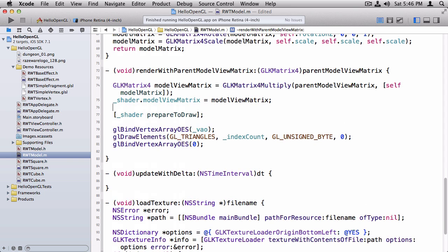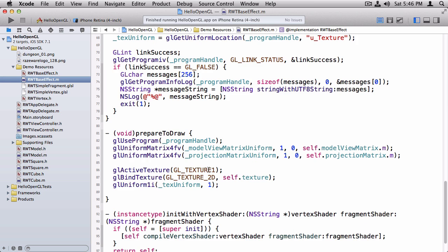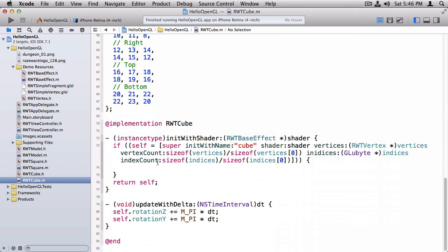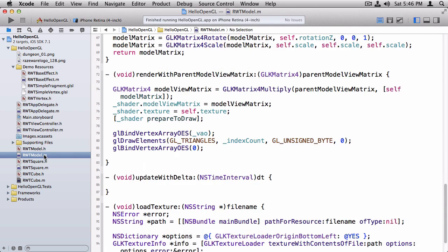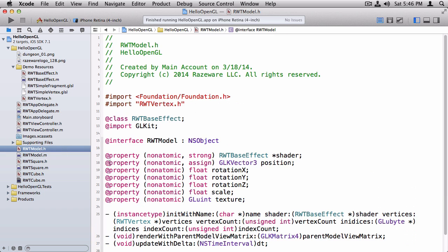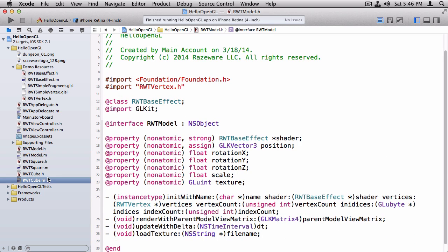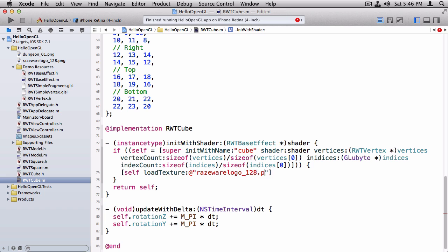Now, all we have to do is we need to, before we call prepareToDraw, we need to set the texture on the shader. So in the shader, prepareToDraw, I'm going to flip back there to refresh your memory of what goes on. We activate textureSlot1. We pass in the texture generated from the textureLoader into basically that slot. And then we say, hey, you're going to find the texture you need in slot1. So we're almost done. Let's go ahead and go back here. And we have to call that loadTexture. I have to take that and move it to the header file. And last but not least, we have to enable blending. To do that, I'm going to go over to the view controller, and I'm going to enable GLBlend. I'm going to set up the blend func appropriately.